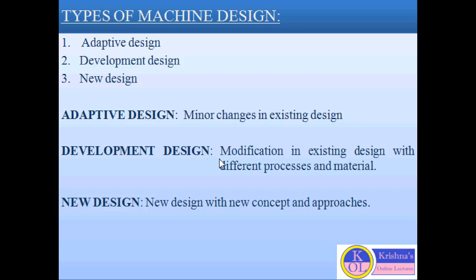The second type of design is development design. Here, with the help of technical abilities and scientific approaches, if the designer is making modifications in existing design using different processes and different materials, that type of design is development design. The existing design is used as reference only, and the changes are not minor — there are major changes made with technical abilities and scientific approaches. Common examples are electronic devices like televisions and cell phones.